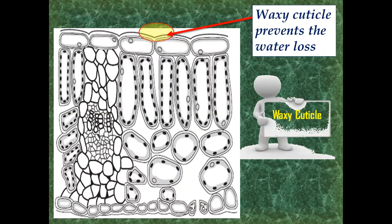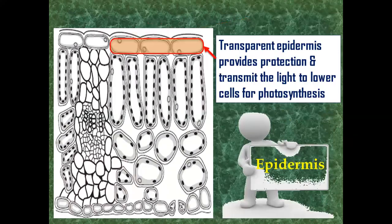Waxy cuticle, which is present on the surface of bifacial leaf and which prevents water loss. This waxy cuticle is thick in xerophyte plants which have low water supply, while this waxy cuticle is comparatively thin in hydrophyte plants.